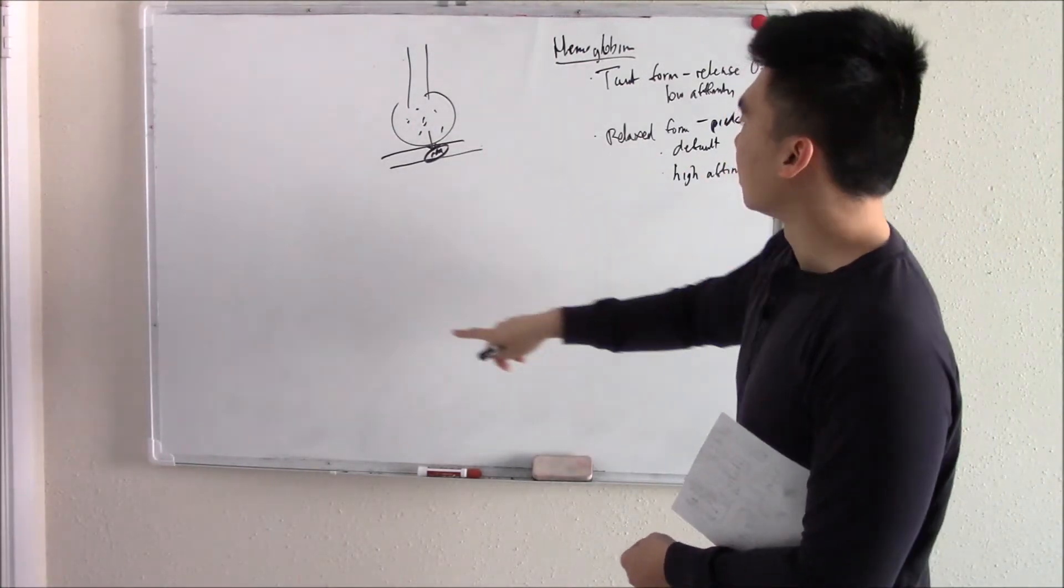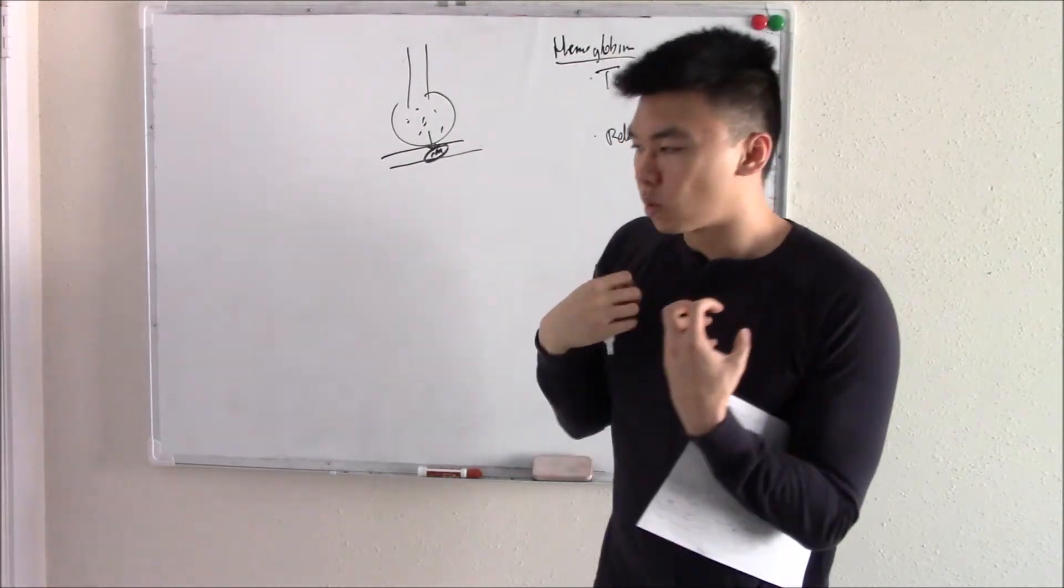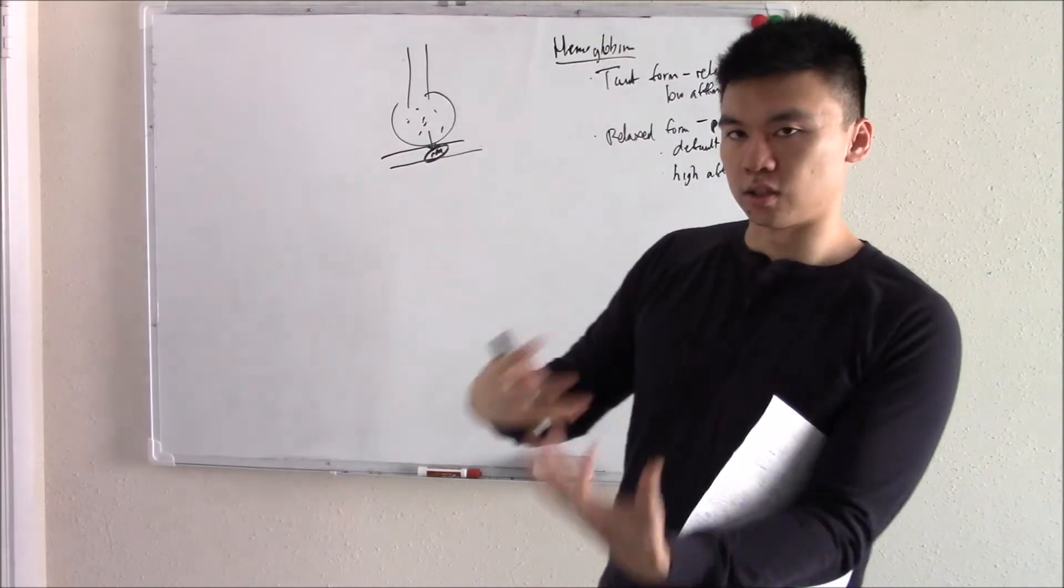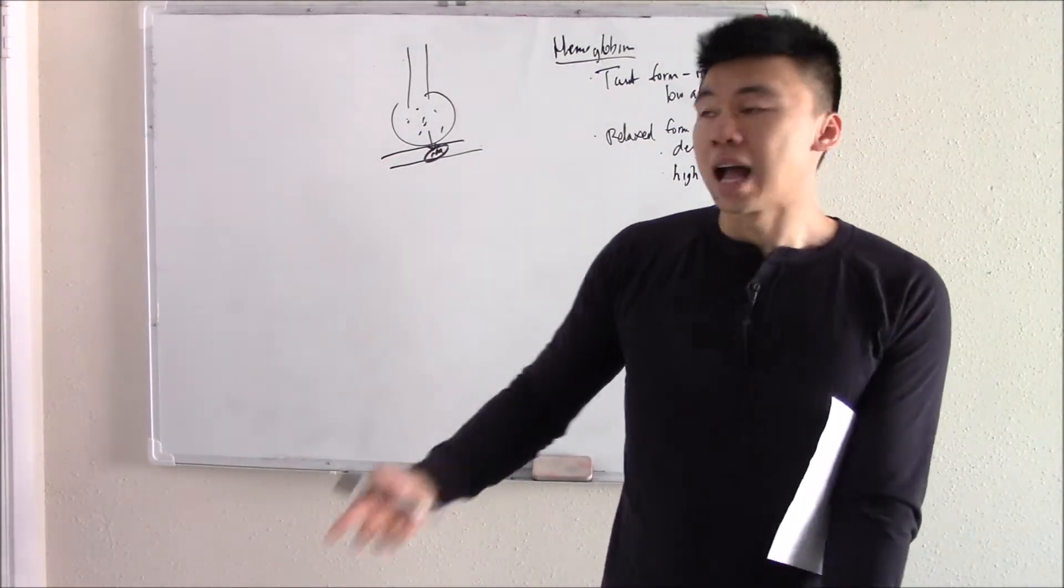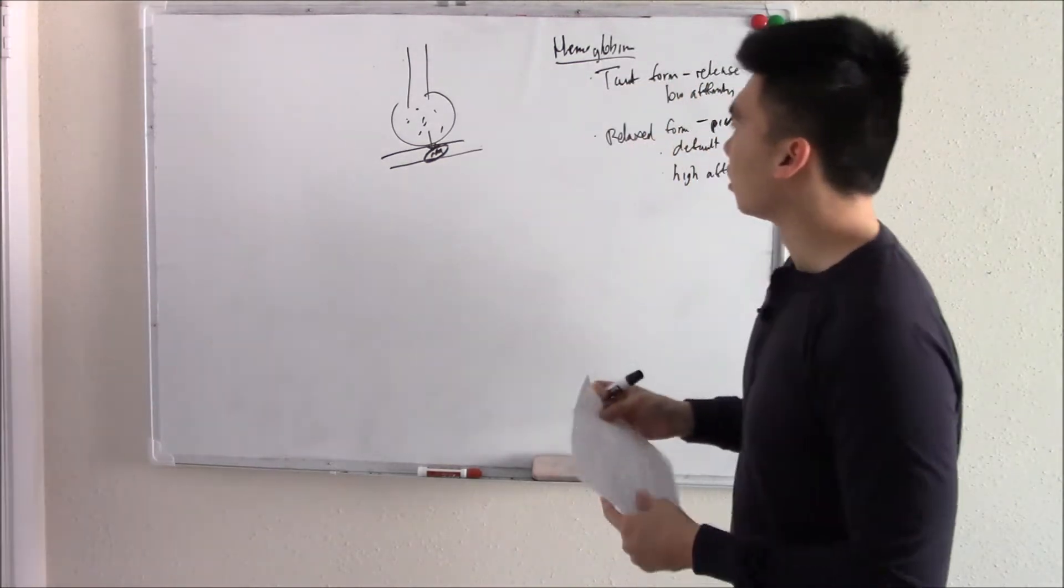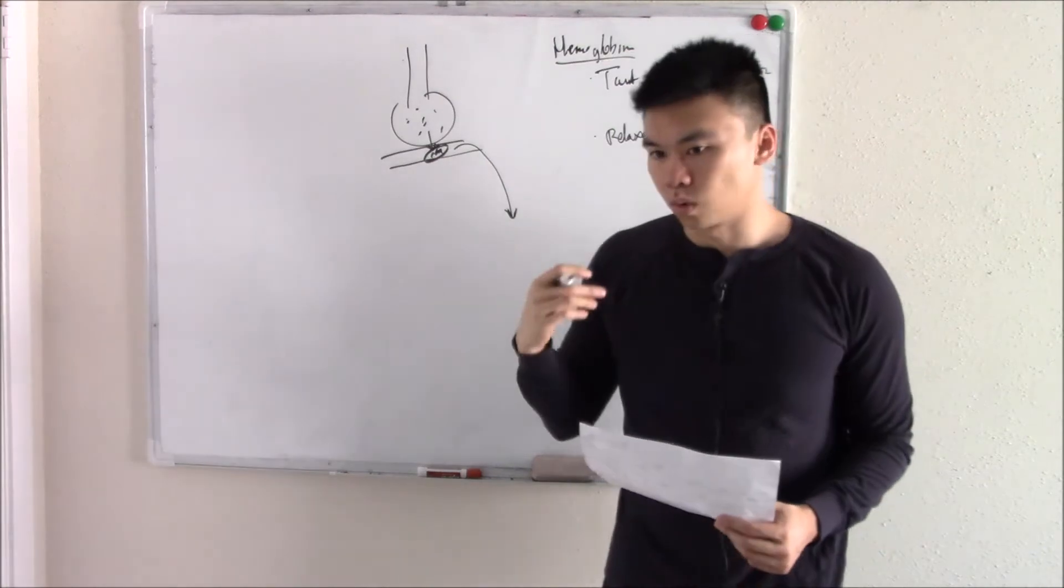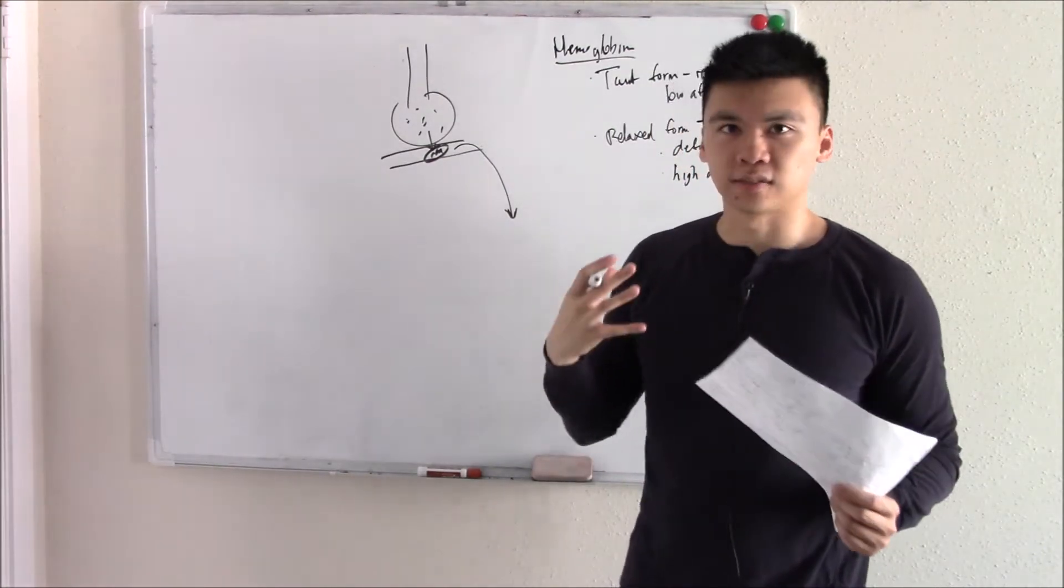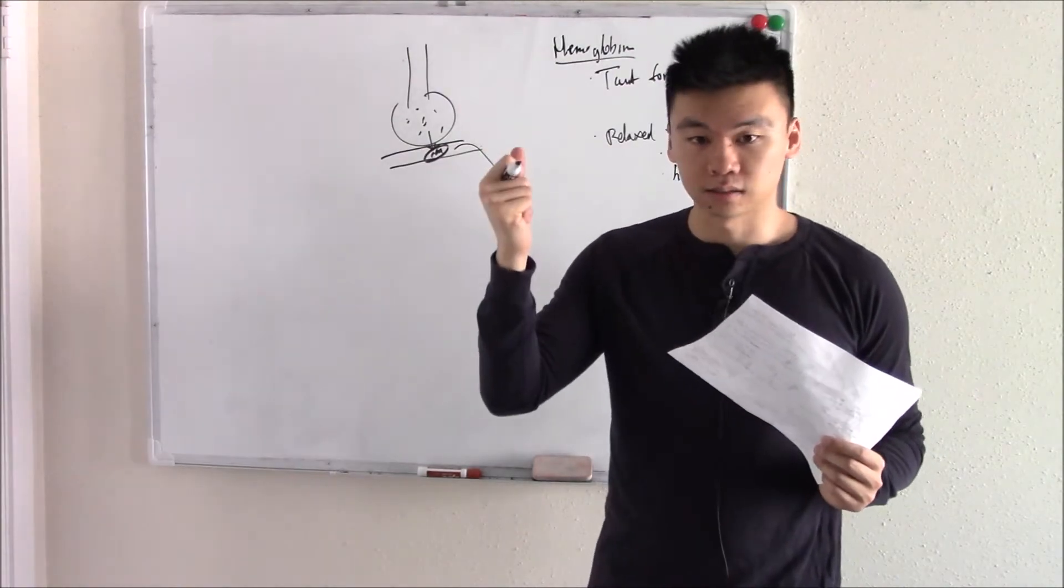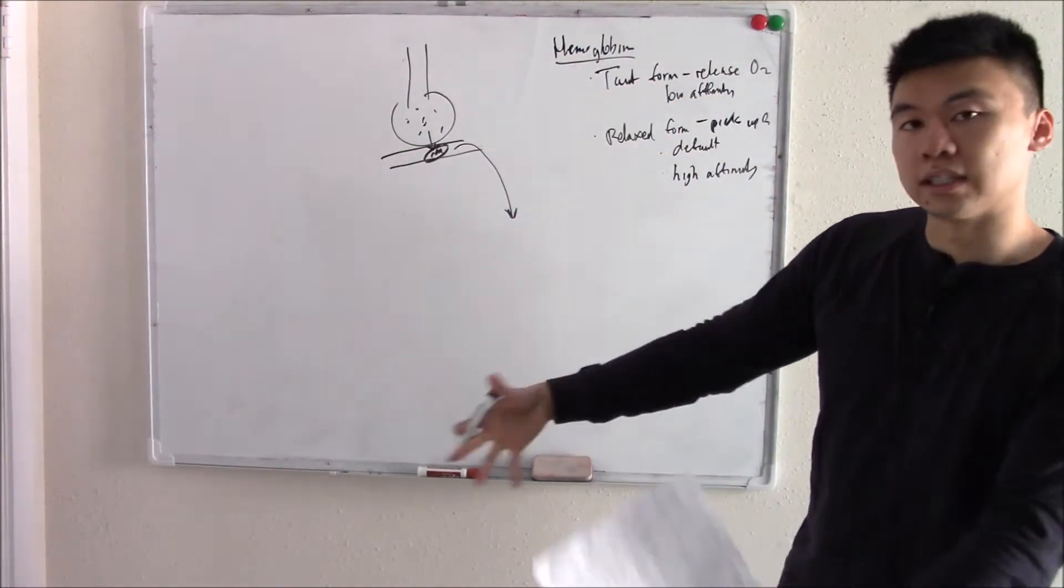So it's circling in your blood in the relaxed form until it goes to your alveoli and it'll pick up oxygen. And then once it goes to your tissue, it'll turn into the taut form and then release that oxygen. How does it know when to turn shapes? It doesn't have a brain. So it'll pick up oxygen and then go to your tissue and start to notice these different type of chemical mediators.